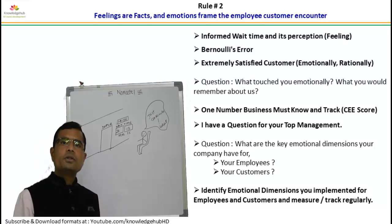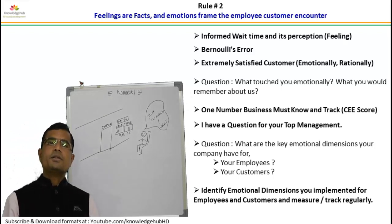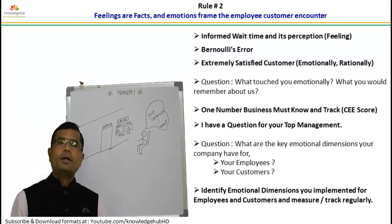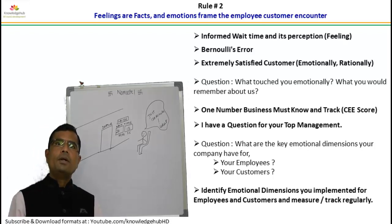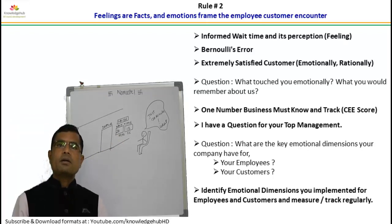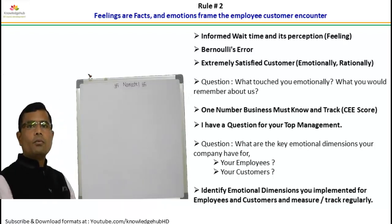Feelings are facts, and emotions from the employee-customer encounter matter. The perception is reality. For example, consider informed wait time in a hospital: a patient waiting outside may feel a longer wait time, but if you inform them of the wait time using a display board, the perception changes. Informed wait time seems shorter. Even if the informed wait time is more than the uninformed wait time, the customer feels better service and carries a good perception about your company. Perception is reality.